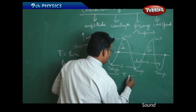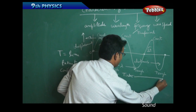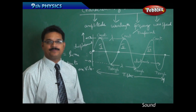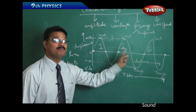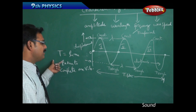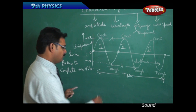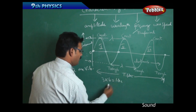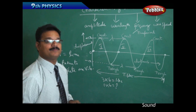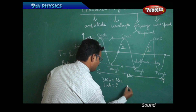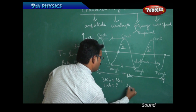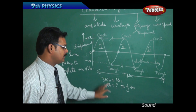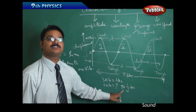Looking at this diagram again — all the waves traveled in one second and we had three waves, meaning three vibrations. But time period is defined as the time to complete one vibration. For three vibrations we took one second, so for one vibration the time taken is 1/3 second. So the time period of this wave is 1/3 second.